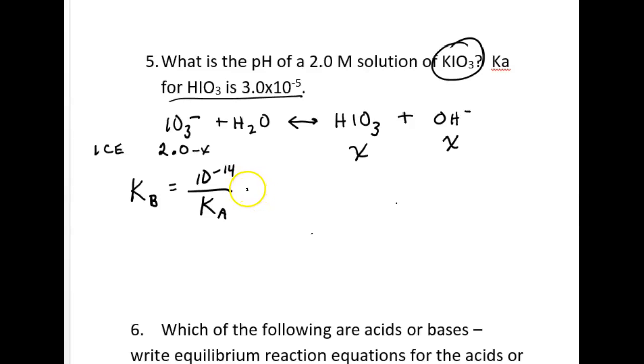And I'm going to put numbers in there. This is 1 times 10 to the negative 14. I've just added a sig fig there, but at the end remember you should only have 2 sig figs. And this is going to be equal to x squared over 2, assuming that 2 is much larger than x. Probably safe assumption.